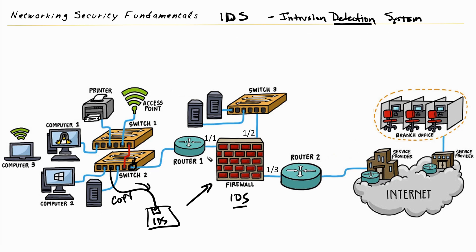Whether the IDS is inline — like a firewall supporting IDS — or a device just receiving copies of traffic, if it's configured as IDS only, it can set off alarms when it sees malicious activity. However, it's not going to prevent the attack from continuing. A common thought is: if it can see the attack, why didn't it stop it?